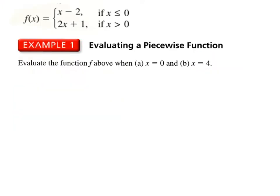The expression x minus 2 represents the value of f when x is less than or equal to 0. And 2x plus 1 represents the value of f when we use x is greater than 0. So in example 1, we're going to take this function, which was from the previous core concept, and we're going to evaluate it when x is equal to 0, and x is equal to 4.